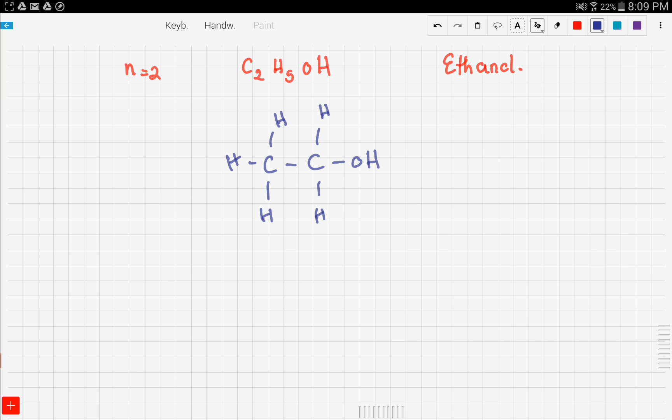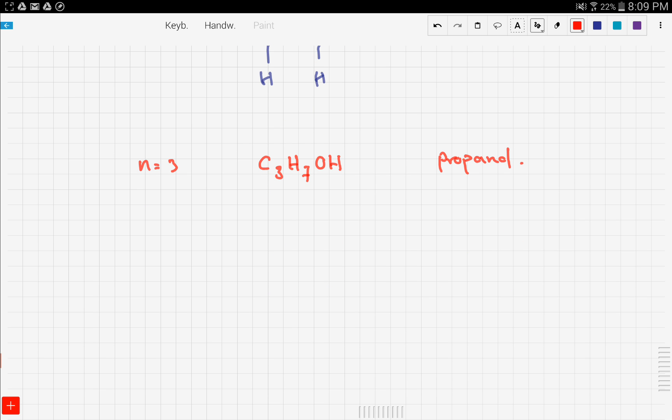The third member can be a bit tricky. Member number three has three carbons, so C3H7OH. How do we name this? Since we have three carbons and it's an alcohol, it's propanol. But propanol has three carbons.